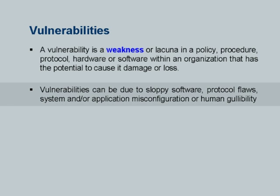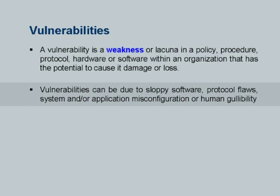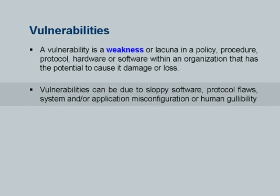What causes vulnerabilities? A variety of reasons — from sloppy software, such as buffer overflow vulnerabilities, to SQL injection and cross-site scripting in web applications. Vulnerabilities may also be due to protocol flaws in standard protocols like TCP, IP, ARP, ICMP, etc., or due to system or application misconfiguration — configuring the registry wrongly, or user and group rights incorrectly. Most importantly, many attacks like phishing exploit human gullibility — people click on arbitrary email attachments, leading to serious problems.